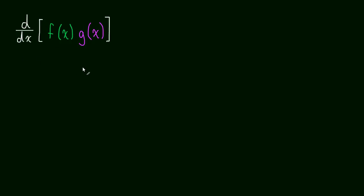So how do we take the derivative of two functions being multiplied by each other? We use something called the product rule.